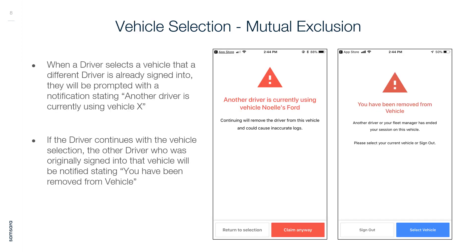Vehicle Selection — Mutual Exclusion: When a driver selects a vehicle that a different driver has already signed into, they will be prompted with a notification stating another driver is currently using that vehicle. If the driver continues with the vehicle selection, the other driver who was originally signed in will be notified that they have been removed from the vehicle.